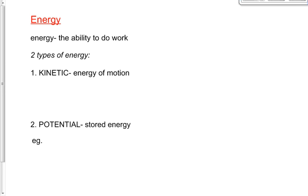Kinetic energy was the energy of motion. Potential energy was stored energy. By the energy of motion, we mean an object is moving — it's doing something right now. If the energy is stored, i.e., it's potential energy, then it's not moving right now, but it has the potential to move. If something's got potential energy, it has the potential to become kinetic. It's either moving right now or it has the potential to become moving — it has the potential to become kinetic energy.